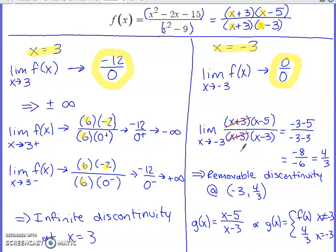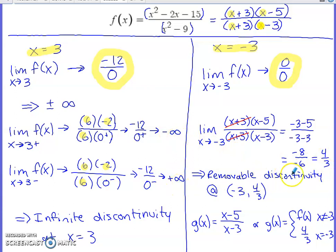Once factored, the common factors of x plus three cancel from numerator and denominator. Substituting negative three into the remaining expression gives negative 8 over 6, which simplifies to 4 over 3. Because we got a finite value rather than infinity, this confirms a removable discontinuity at x equals negative 3, with the limit value of 4 thirds.